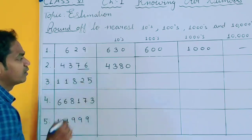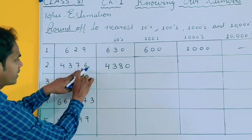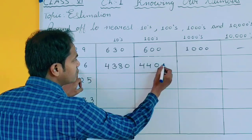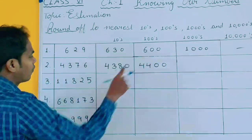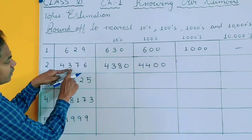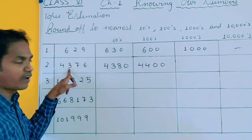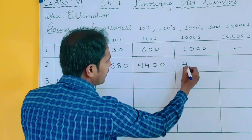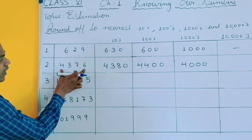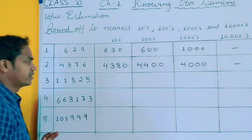For rounding off to 100, you will check the last two values. This is more than 50, so plus 1 here — the result is 4400. For rounding off to 1000, the last three digits are 376, which is less than 500, so 4 will remain as it is, giving 4000. For converting into 10,000, you cannot do it — leave it as it is.